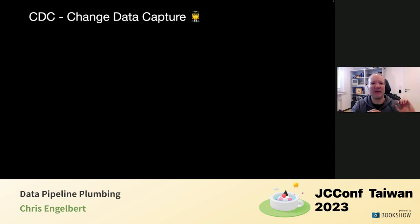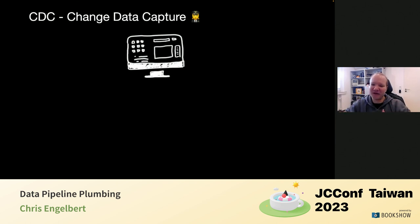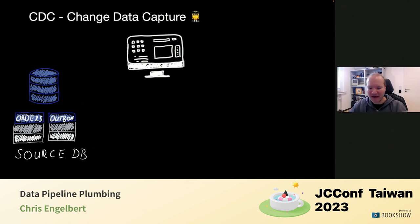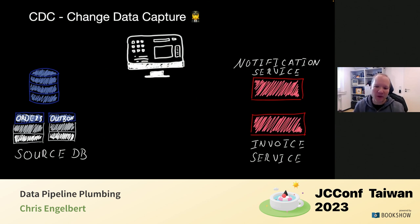Let's get down to the actual patterns — that was necessary groundwork because everything we just learned is needed to understand why these patterns matter. The first is CDC — Change Data Capture. You have a UI, somebody orders something, and we write it to an orders table in the database. What we then want is to send out notifications — email, SMS, WhatsApp — and generate an invoice.